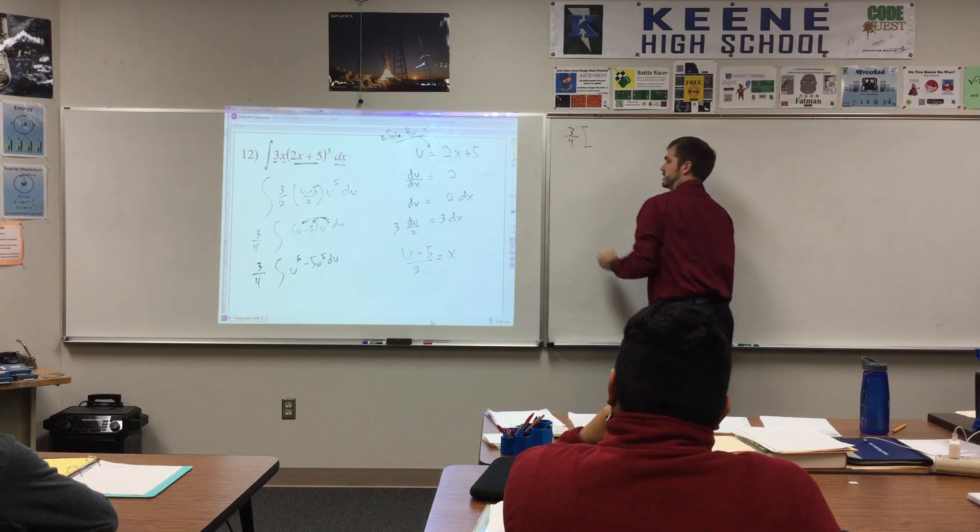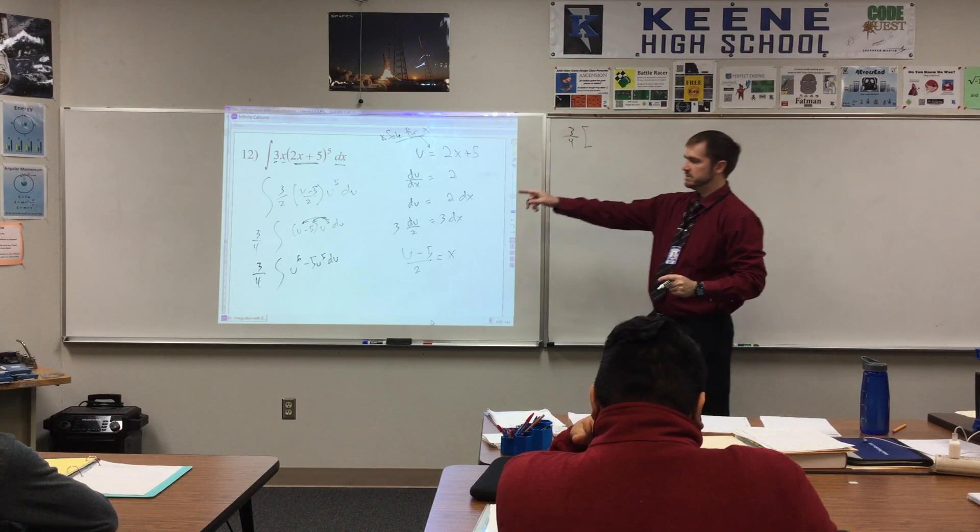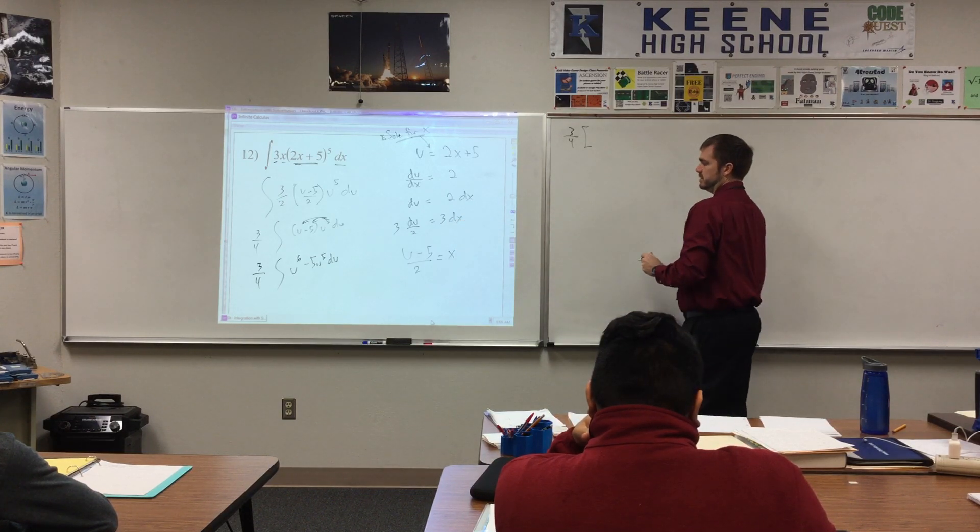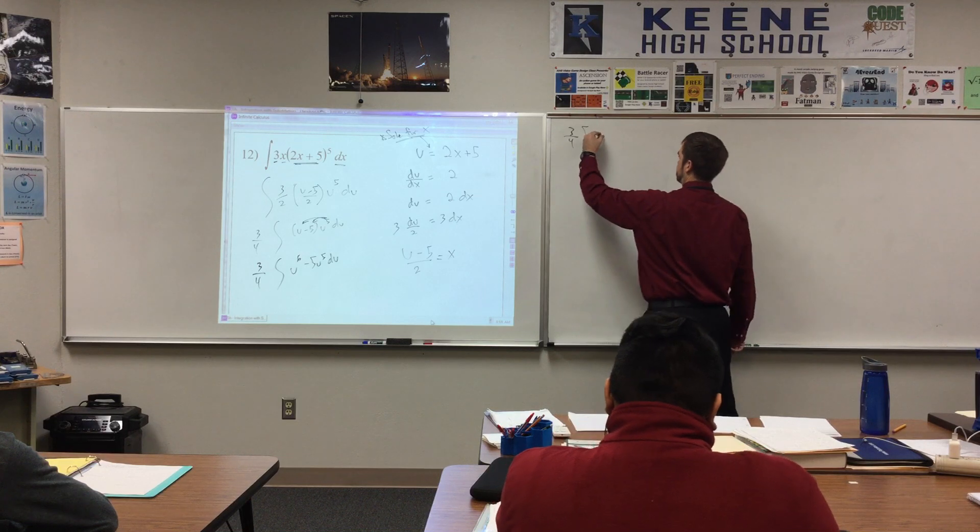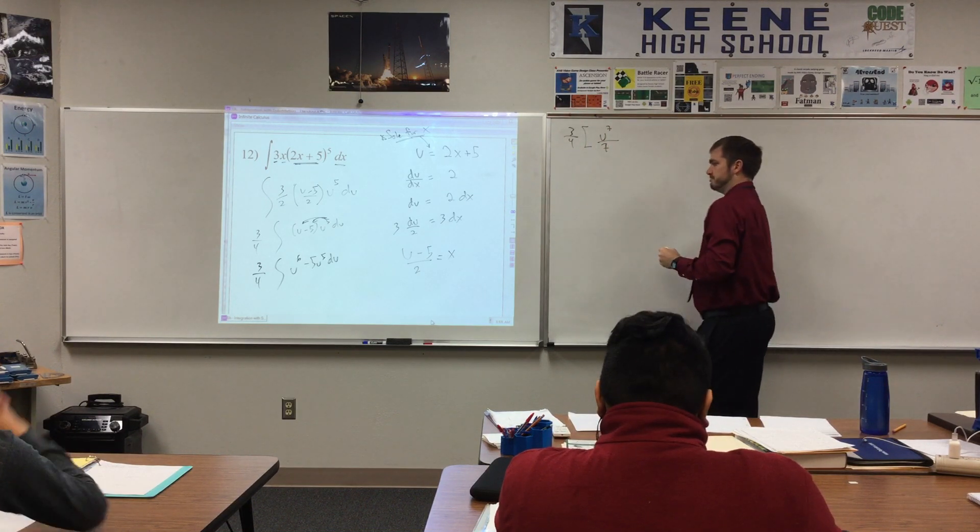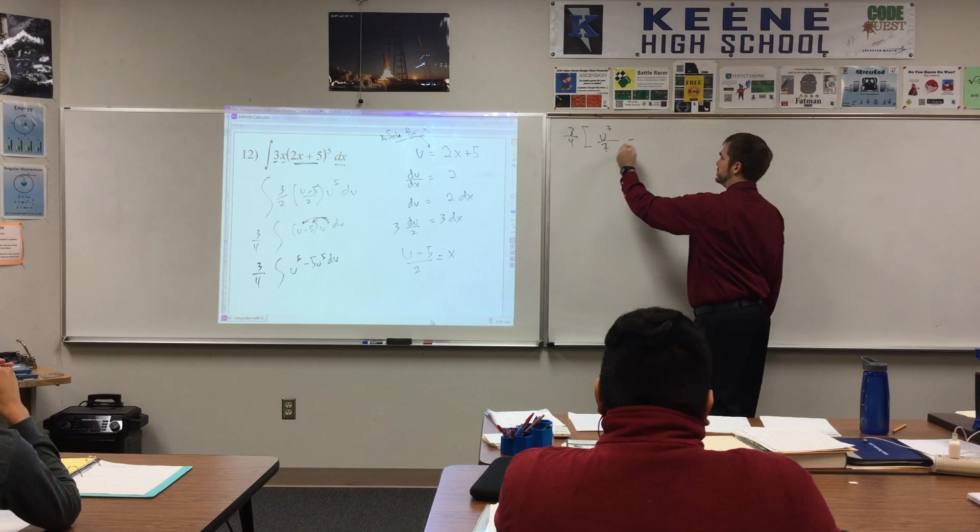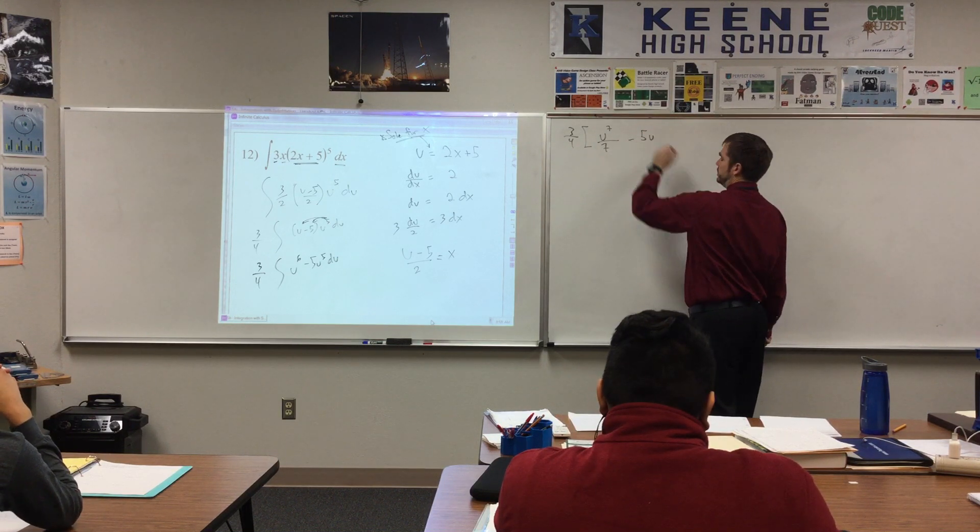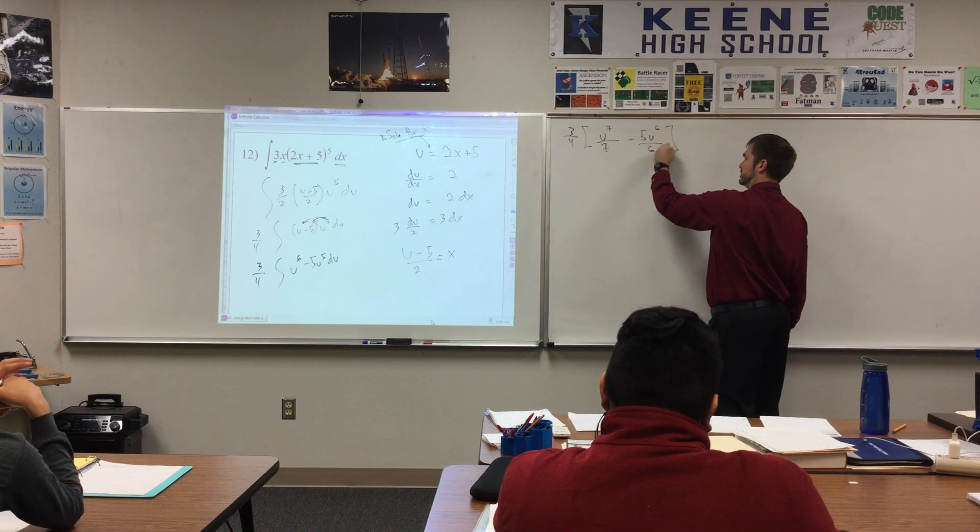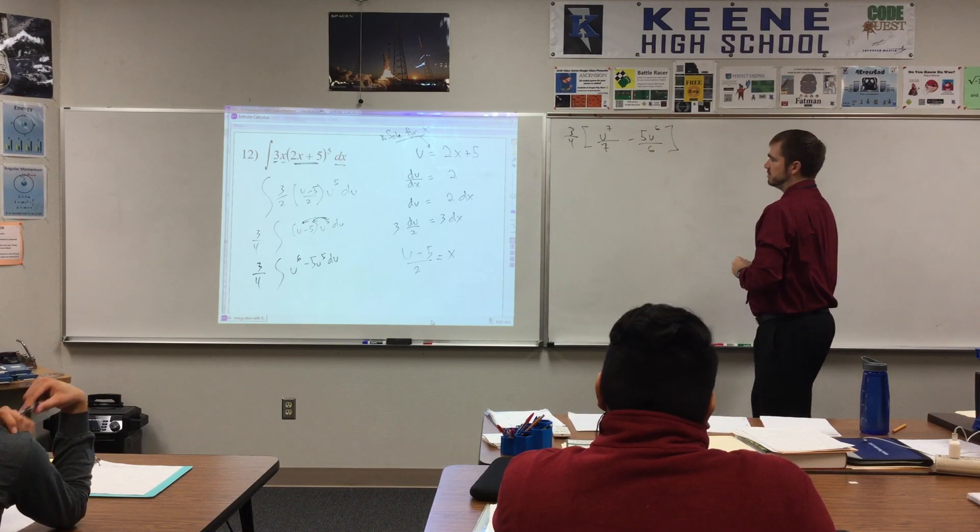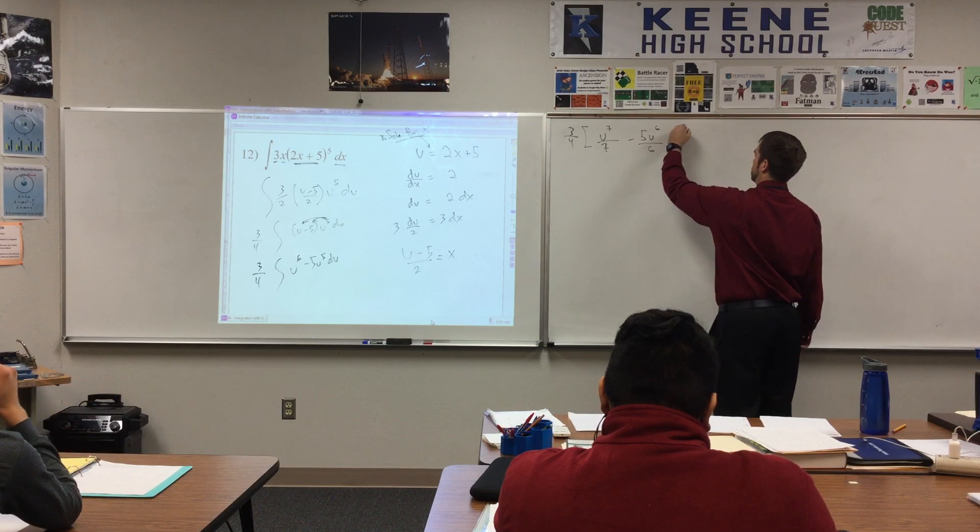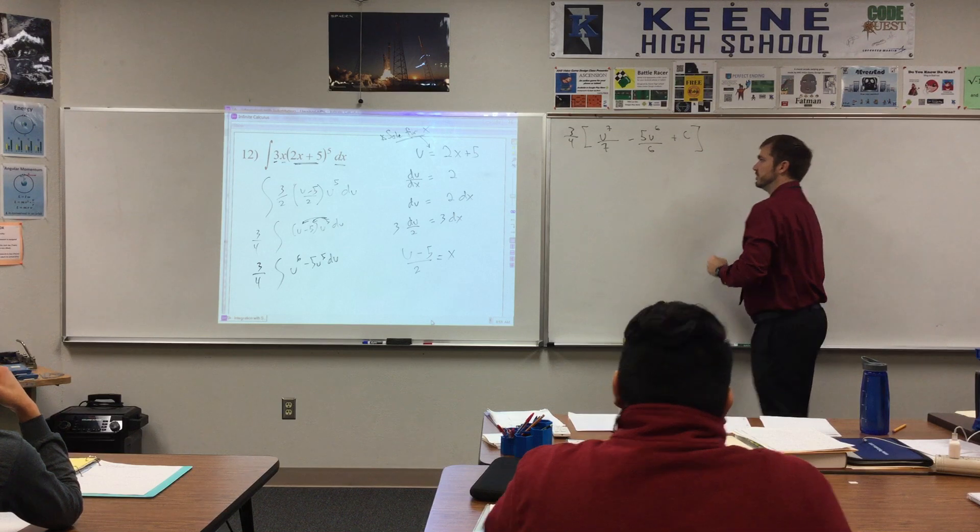Carry that over here. 3 fourths times. Alright, blast. Monday morning, but we're awake now. Now, what's the antiderivative of u to the sixth? U to the seventh over six. Over seven. Over seven, that's right. Minus 5 u to the sixth over six. Plus c.